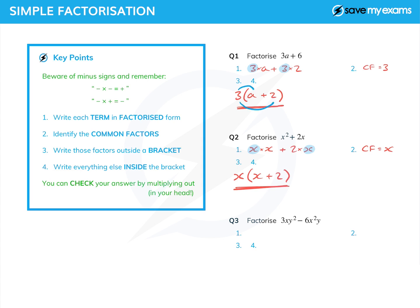The first one: 3 times a is 3a, and 3 times 2 is 6, so that works. The second one: x times x is x², and x times +2 is 2x, so we have the correct answers.